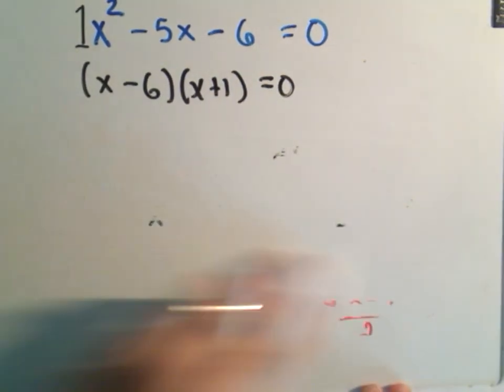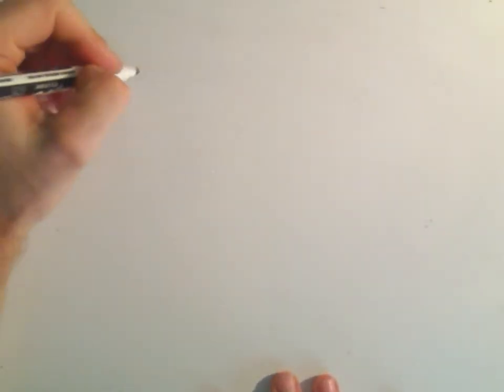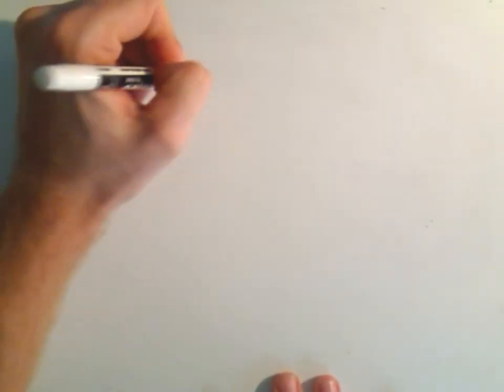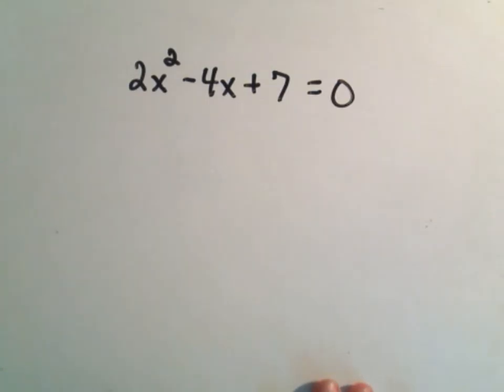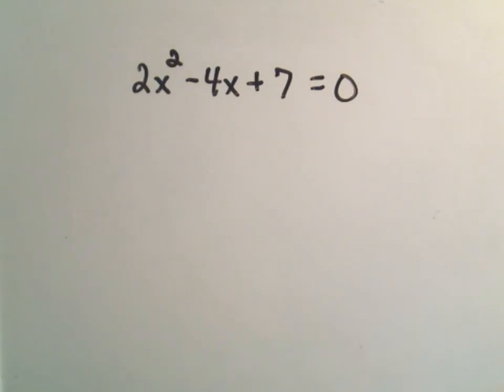The quadratic formula is long, so if you can factor something, factor it. But not everything factors easily. Suppose we wanted to solve 2x² - 4x + 7 = 0. In this case, I don't think it's going to factor easily.